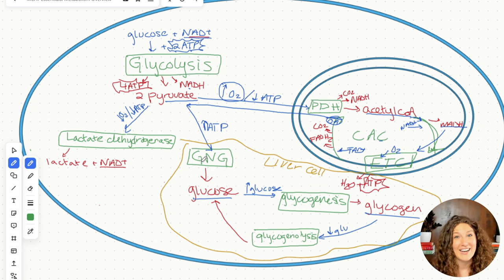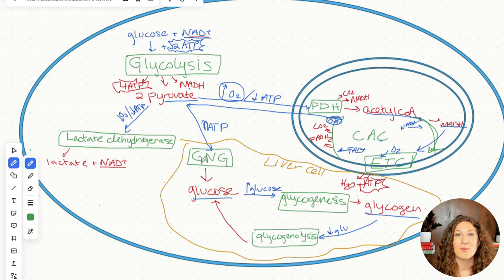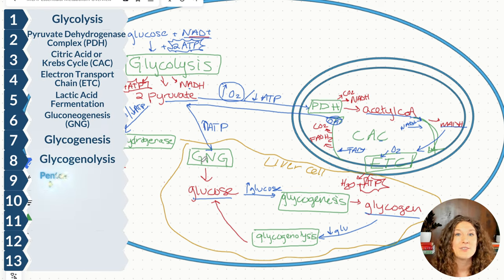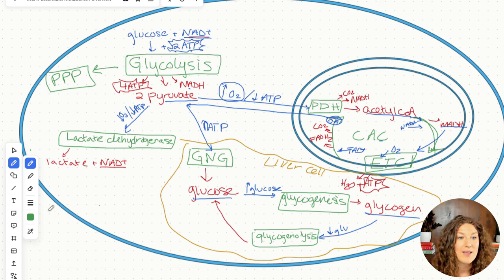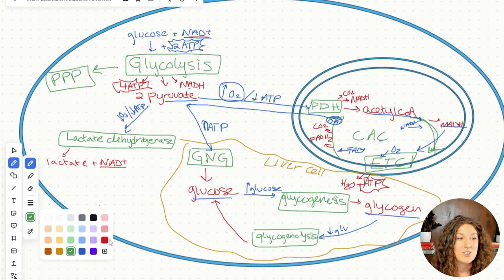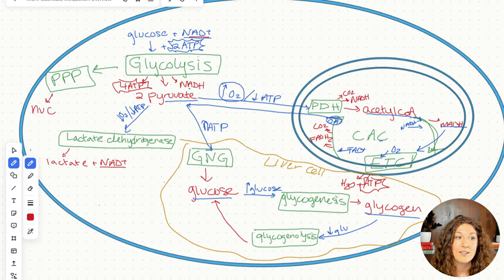That was all of carbohydrate metabolism — everything that can happen with carbohydrates in terms of metabolic processes in our cell. Before we move on to lipid metabolism, I want to mention one lower-yield pathway called the pentose phosphate pathway. This pathway branches off of glycolysis, and it's used when we have plenty of energy — high ATP levels. Instead, what we need is nucleotides and NADPH. Our products from the pentose phosphate pathway are nucleotides, like new DNA molecules.